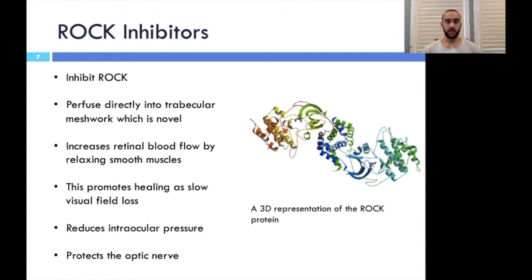ROCK inhibitors also increase retinal blood flow by relaxing vascular smooth muscle cells, directly protecting neurons against various stresses and promoting wound healing. These additional effects may help slow progressing visual field loss in some patients. The combination of these factors decreases the intraocular pressure and protects the optic nerve.